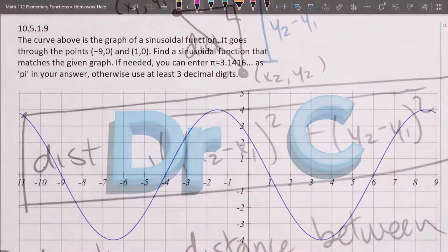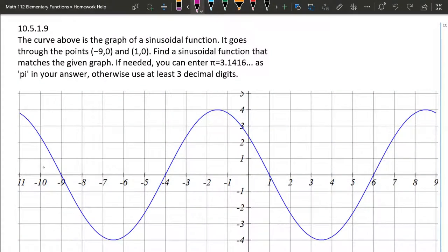Here's a sine or cosine function and they tell us it goes through the points negative nine zero, so let's go ahead and label those, and one zero. Now I can tell there's some other points it clearly goes through, for example the other x intercepts right there. So instead of using this point let's instead use the point six zero.